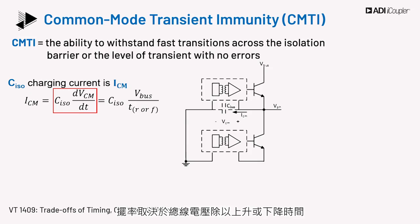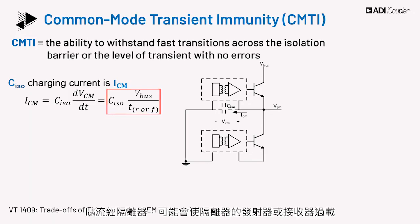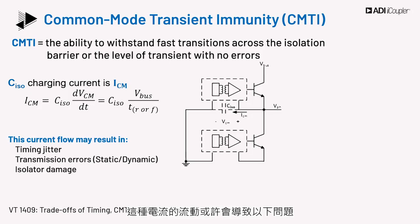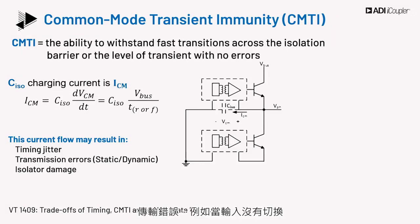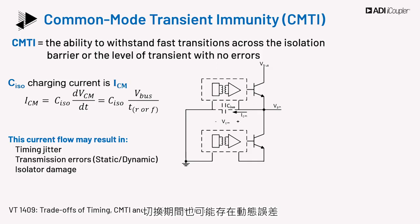The charging current is equal to the product of CISO and the slew rate at the switch node. The slew rate depends on the bus voltage divided by rise or fall time. ICM flows through the isolator and can overload the isolator transmitter or receiver. This current flow may result in the following issues: timing jitter, which may change propagation delay beyond the allowable bounds as per the datasheet; transmission errors, such as static errors when the input is not switching and the output is held either high or low; dynamic errors present during switching; and finally, isolator damage.